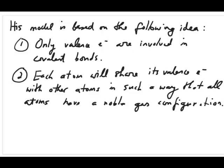The Lewis model is based on the following two concepts. The first one is that each atom has valence electrons around the nucleus, and only those valence electrons are involved in the covalent bond. You can draw the number of valence electrons around each atom, which I'll illustrate in the next slide.